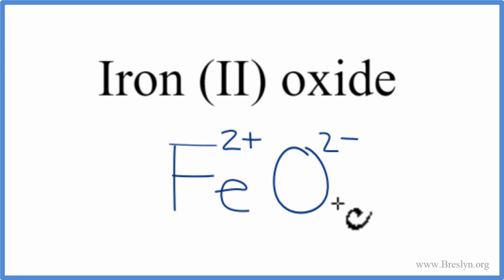So this is the formula for iron (II) oxide, FeO. Let's get rid of the charges here. And that's it. Iron (II) oxide, FeO.